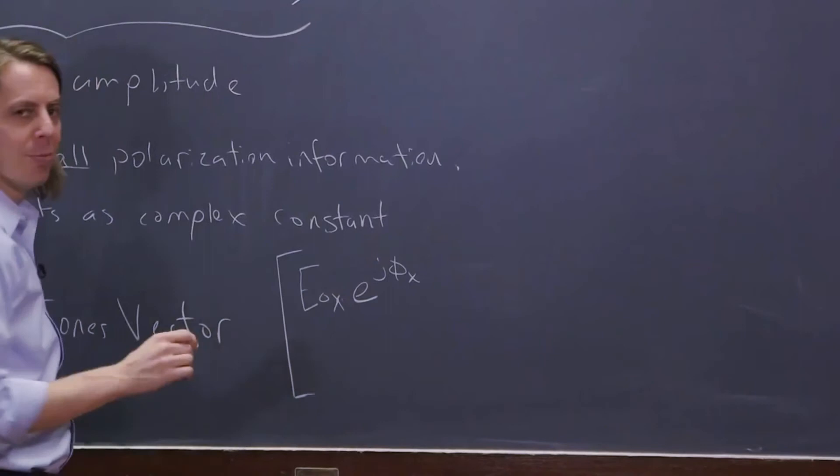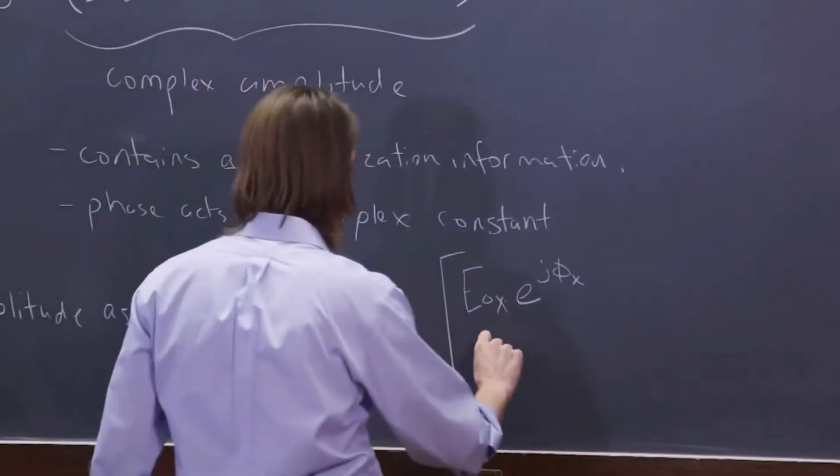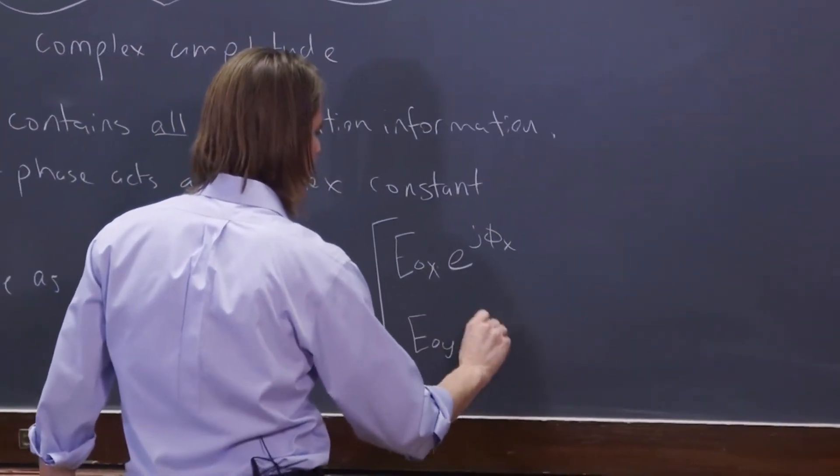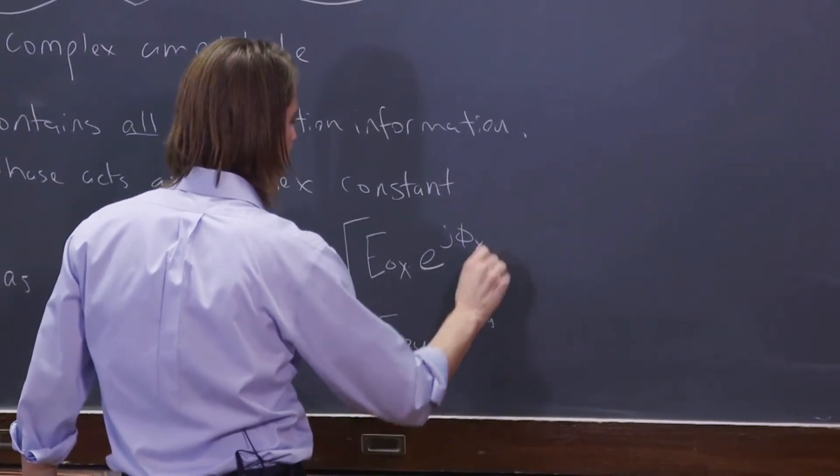And then you put the vertical component on the bottom. So E naught Y, E to the J phi Y.